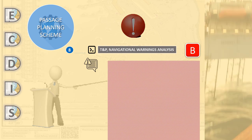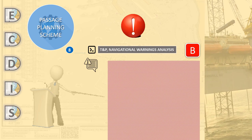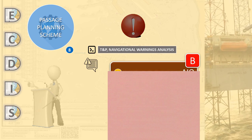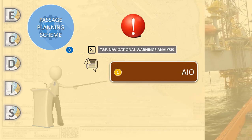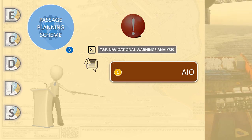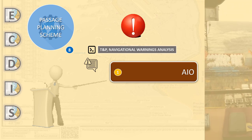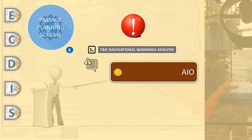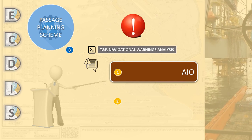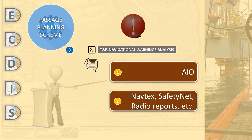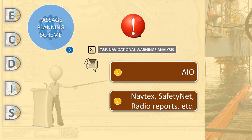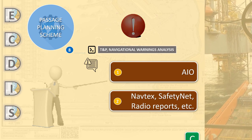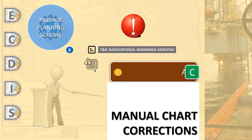If you use the mariner's notes function on your Aegis to mark temporary items of interest, your notes should be checked against each week's AIO update. The safety information received from Navtex, SafetyNet, or from radio reports must also be added to your ENCs during voyage planning.